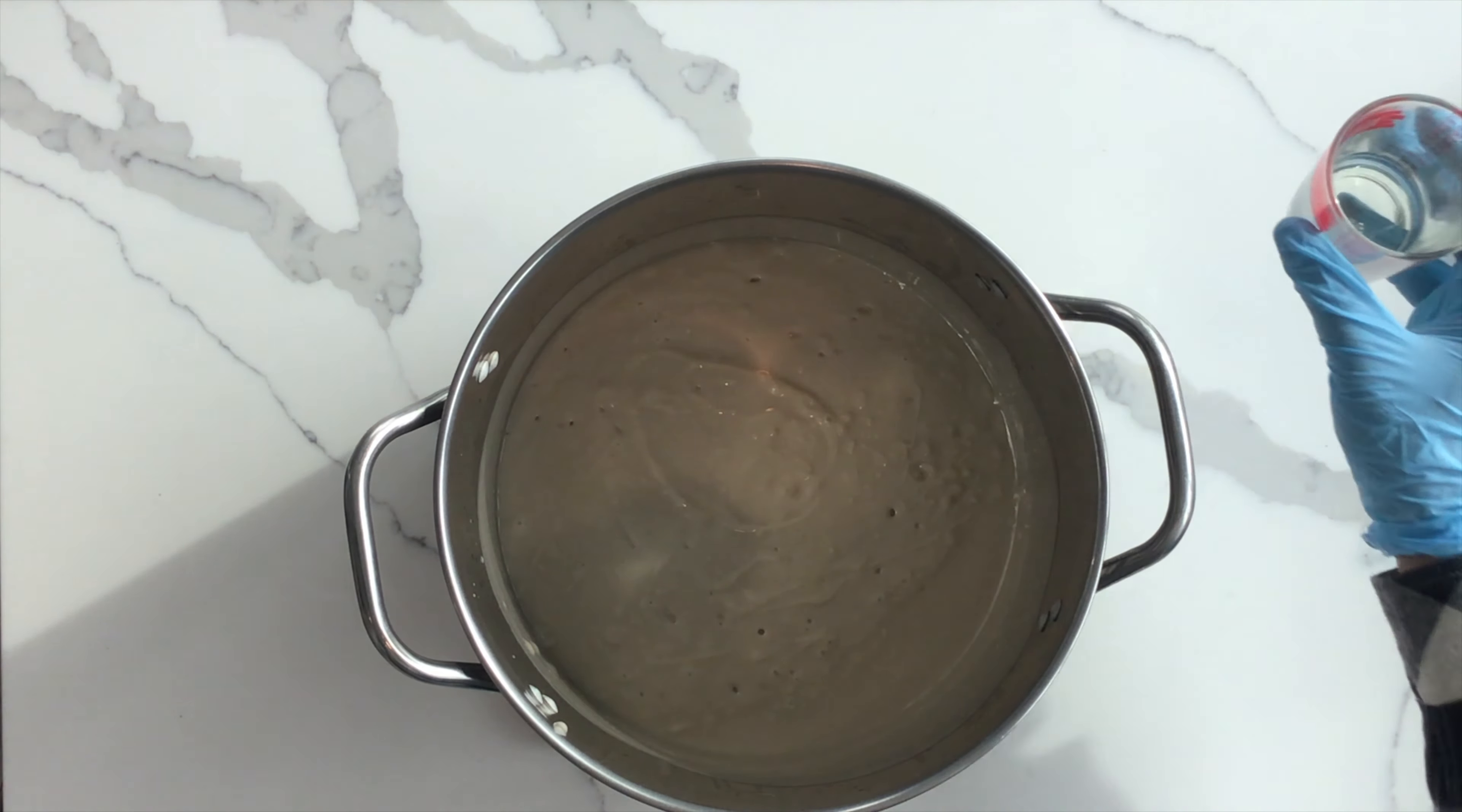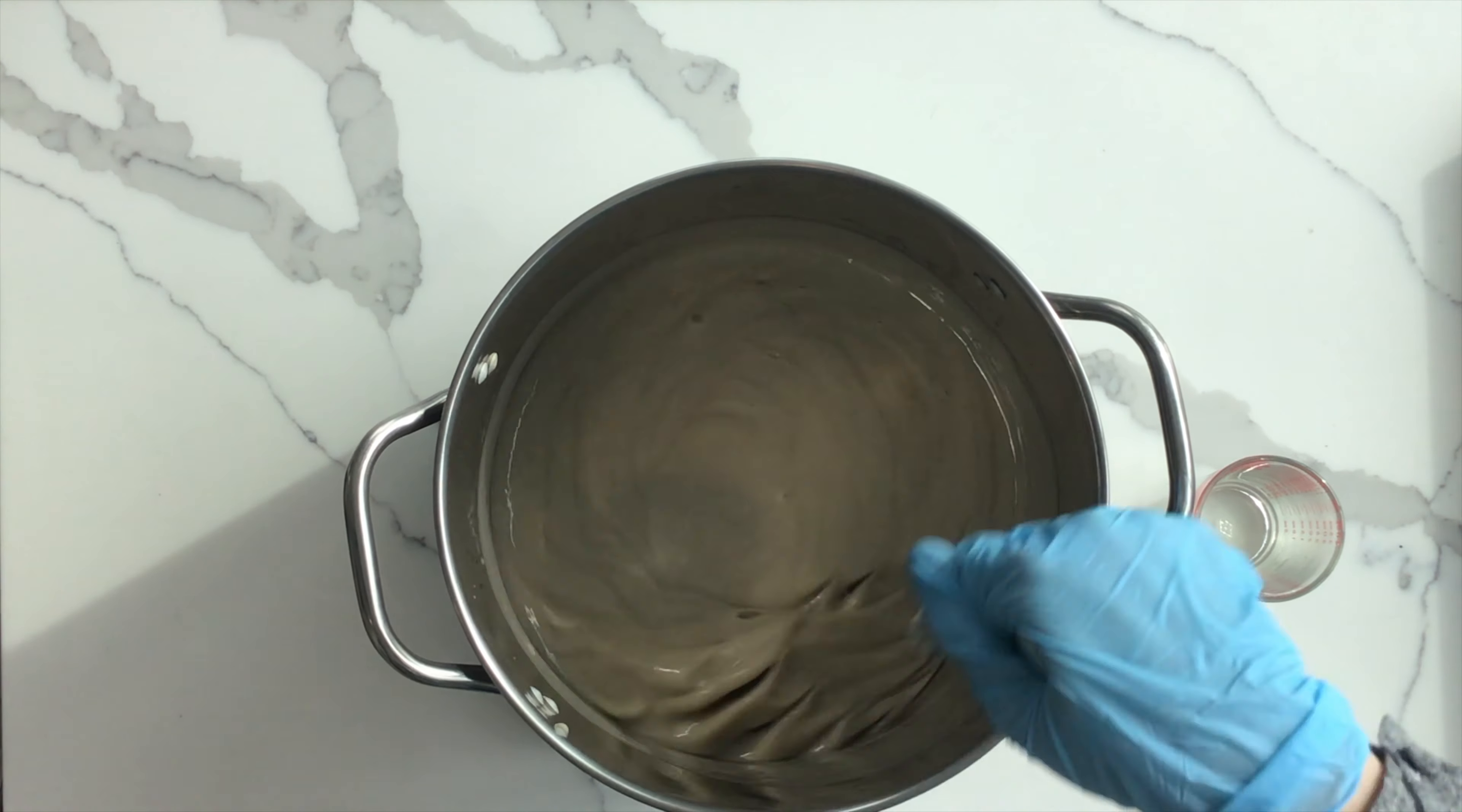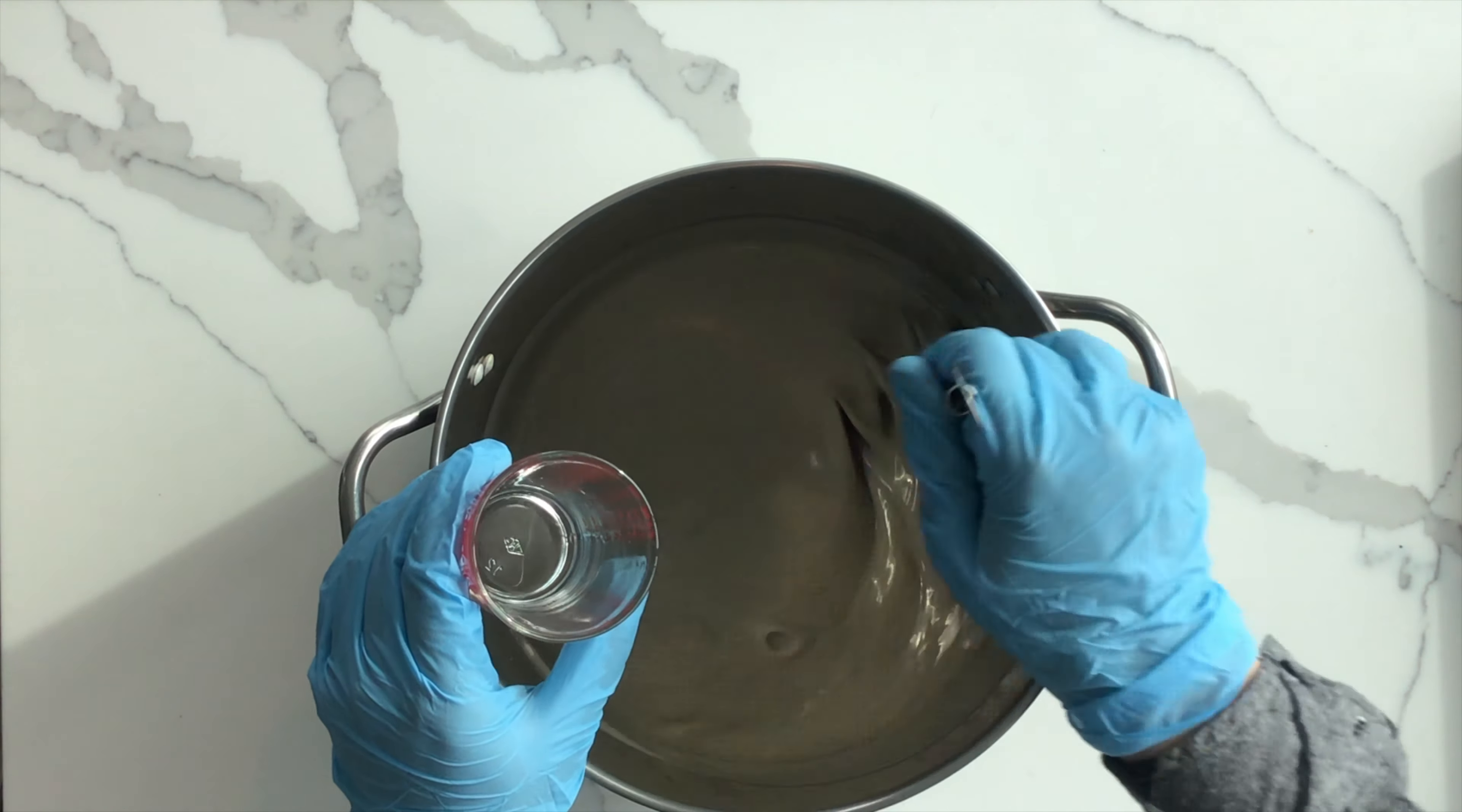Now it's time to add the essential oil. Use the whisk again to ensure it's mixed evenly. If you use the immersion blender, you risk over mixing and not incorporating the essential oil evenly into the mixture.